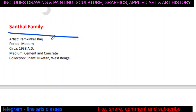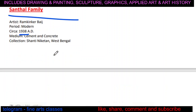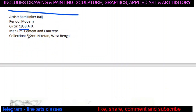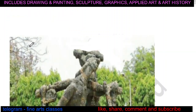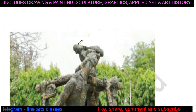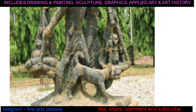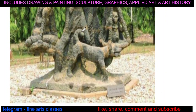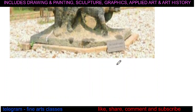The next sculpture is Santhal Family, by artist Ram Kinkar Baij. It belongs to the modern period, dated 1938 AD, and is made of cement and concrete. It is located at Shantiniketan, West Bengal. Notice the texture of this sculpture and compare it with the texture of Triumph of Labour.